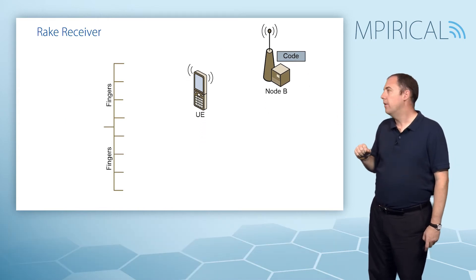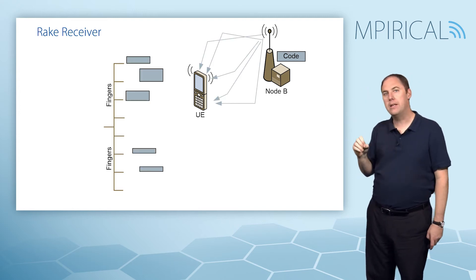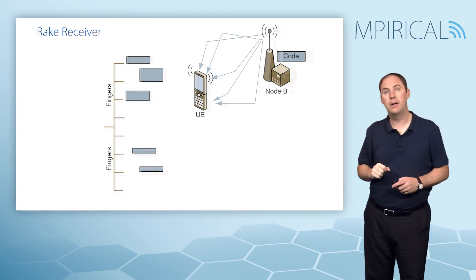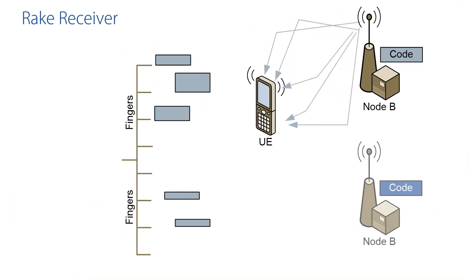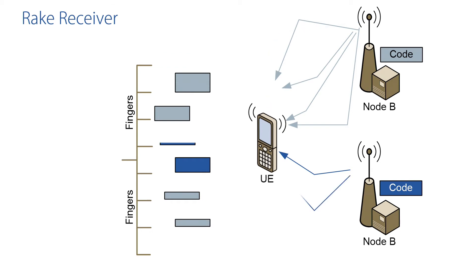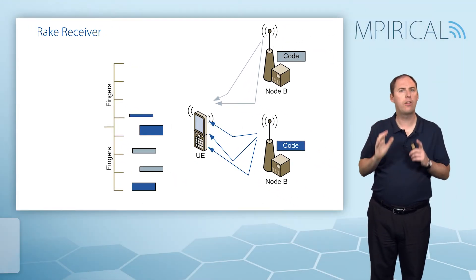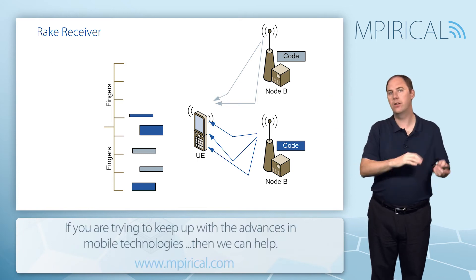Taking that one stage further: in a soft handover scenario, we've got multipaths coming down and we're using some fingers for the current Node B. As we do a soft handover, we can utilise spare fingers to pick up multipaths from the other Node B — remembering that it uses a different code. So different fingers can look at different codes. The number of fingers assigned to each cell dynamically changes. As the mobile moves, it sees new multipaths from the new Node B and adds those to its rake receiver fingers. In a three-way soft handover, some fingers would be assigned to the third cell.